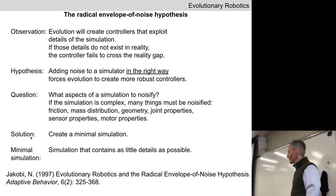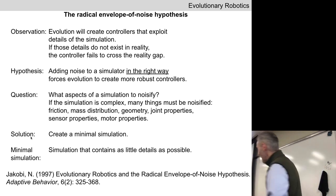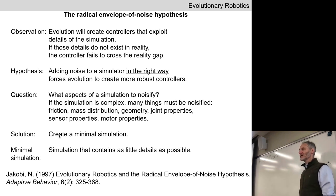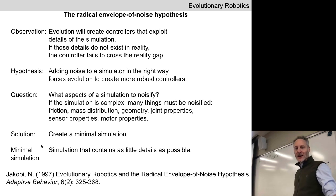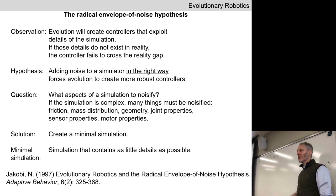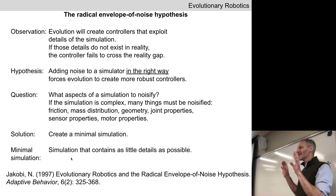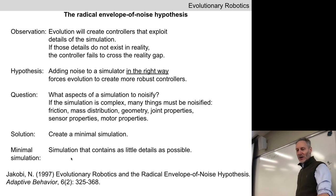The solution the author came up with back in 1997 was minimal simulation — what is the simplest possible simulation we can make? The minimal simulation inspired some of the minimal cognition experiments we saw last month. We're going to look at a minimal simulation that contains as little detail as possible, but enough that evolution evolves something that transfers to reality.